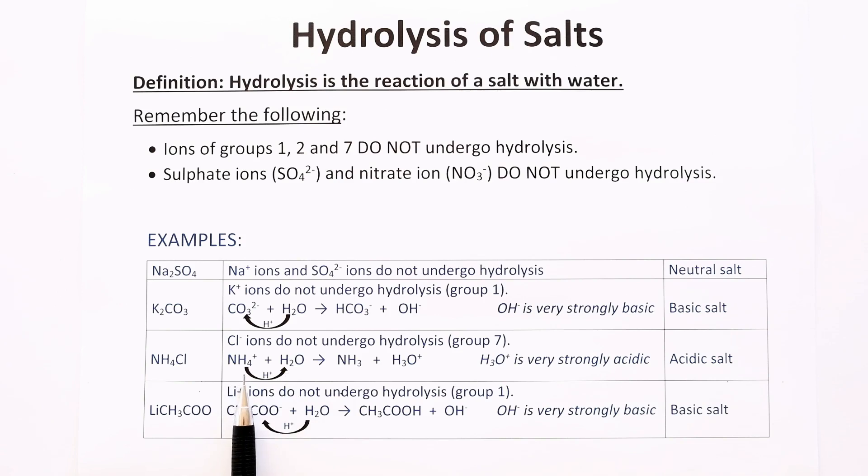The reason we know this is the acid is because this cannot be a base. You haven't seen NH5 2+, where it could act as a base and accept a proton. So we assume this is the acid. It donates the proton. We have ammonia and a hydronium ion. Hydronium ions are very strongly acidic. Therefore, this is an acidic salt.